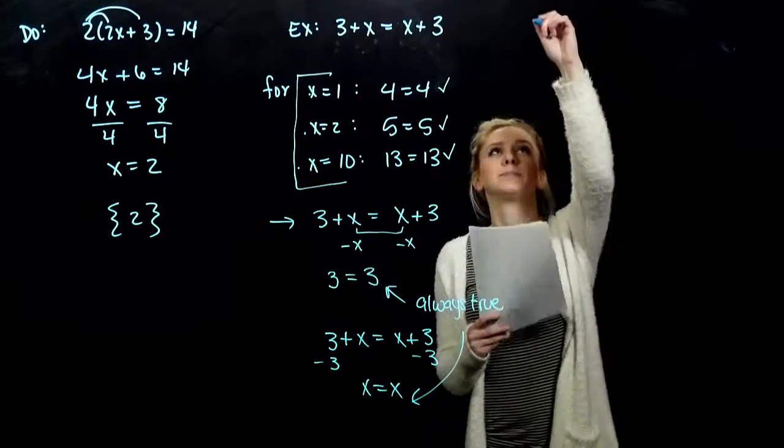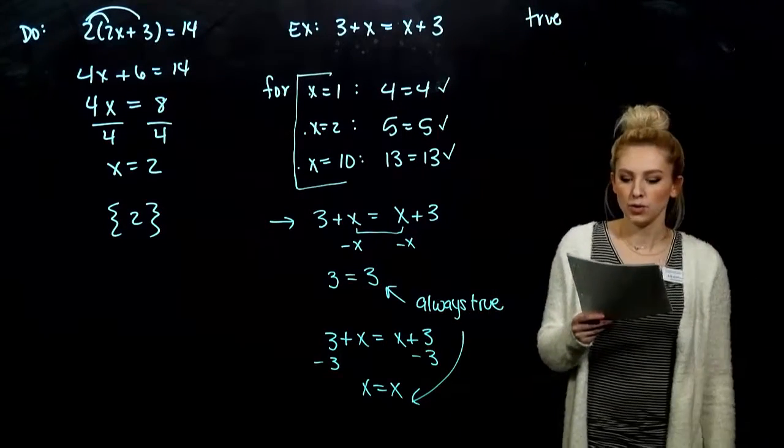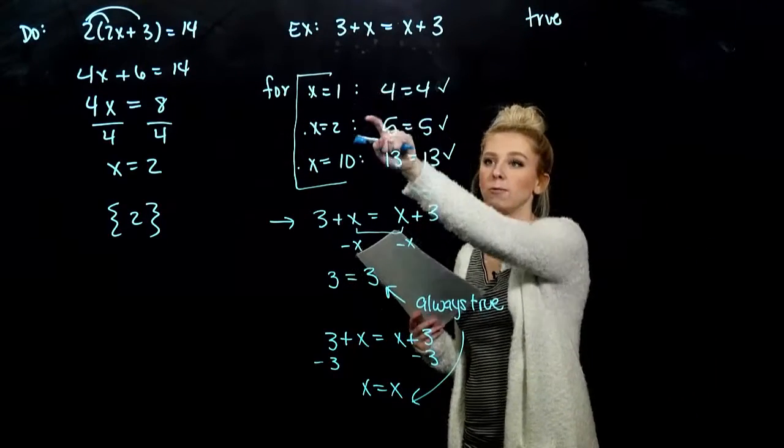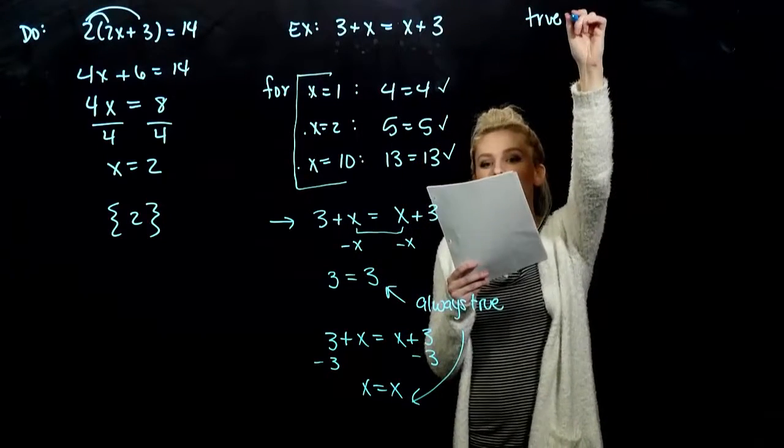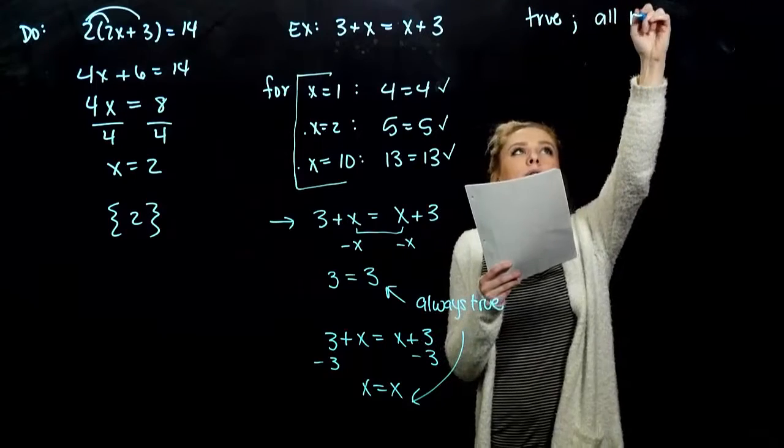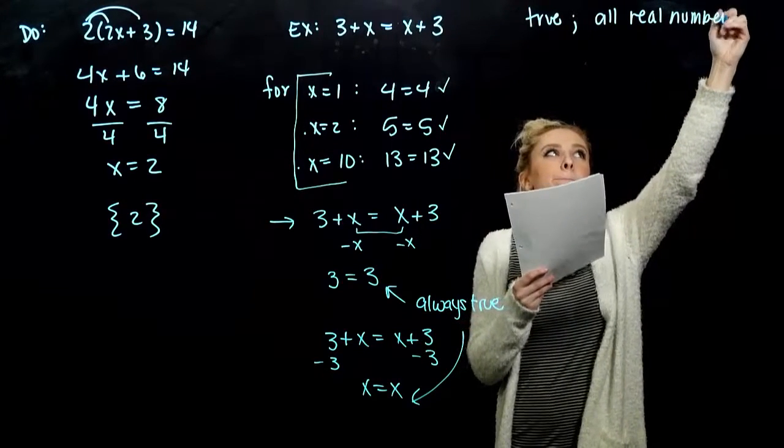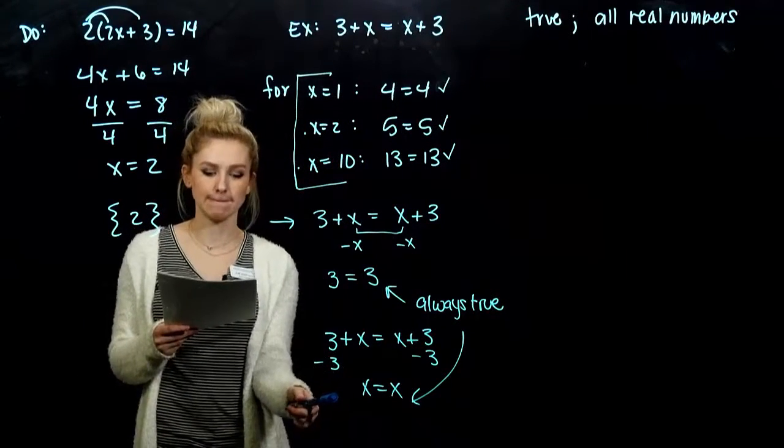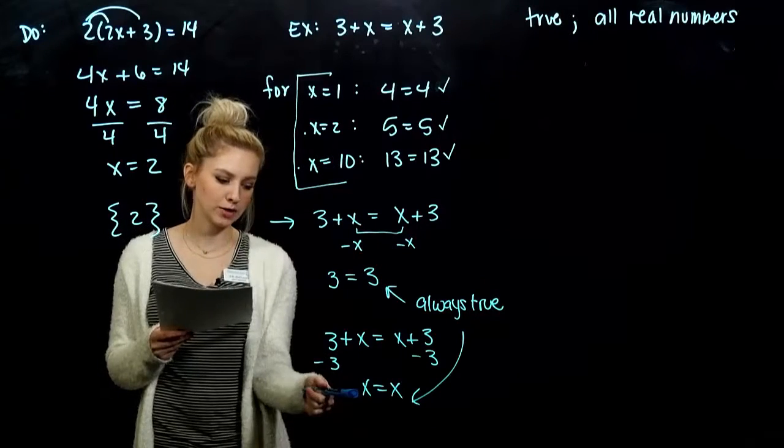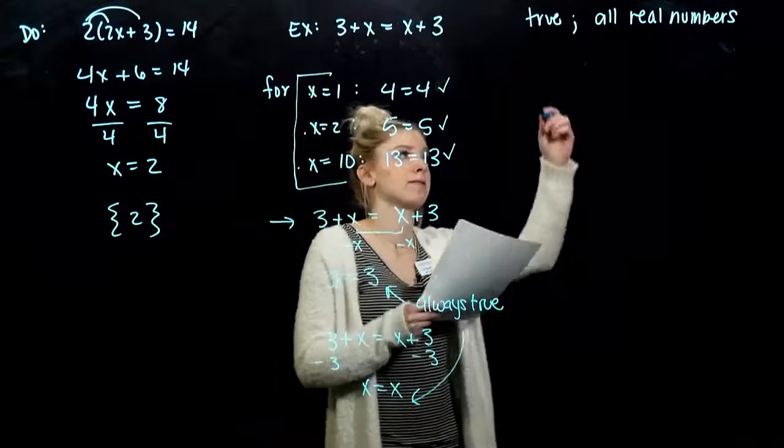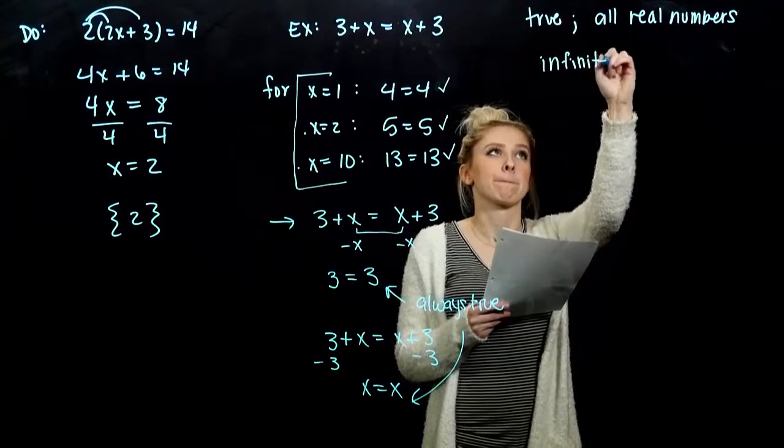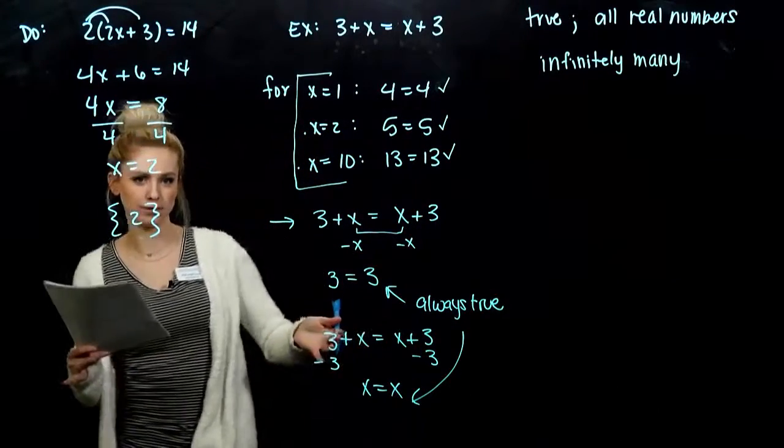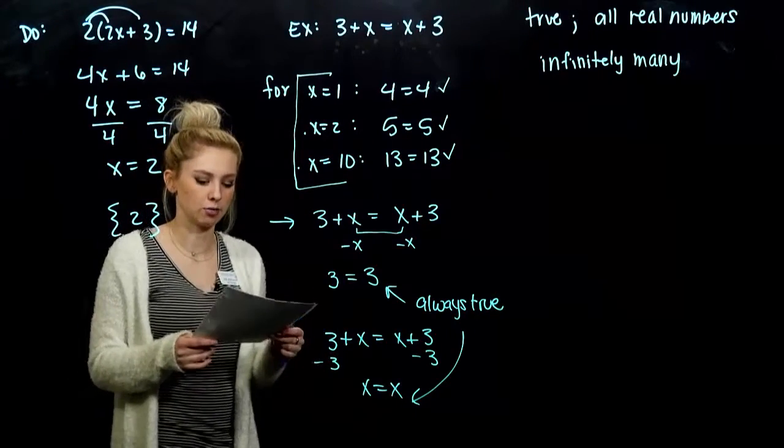We end with a true statement. So the original equation holds for all real numbers. Regardless of what x I plug in, like we saw before, the statement is always true. How many solutions do I have to this problem? It's a statement that's always true. It doesn't matter what I plug in for x, so I have infinitely many solutions that I can plug in. Positive, negative, zero, fractions, decimals, anything will work as long as it is a real number.